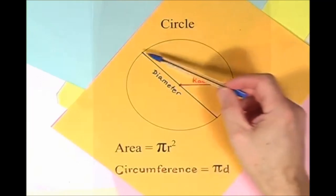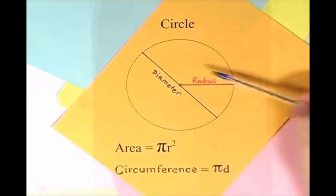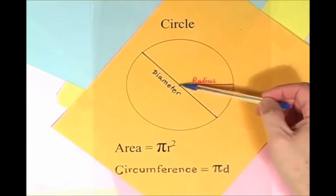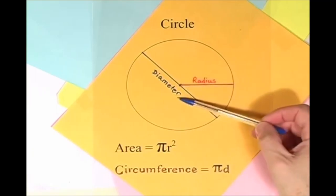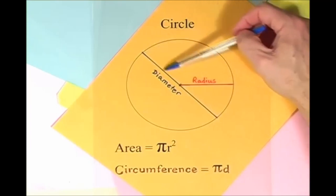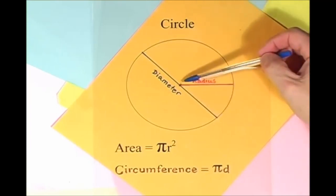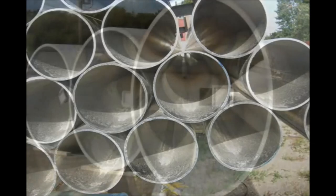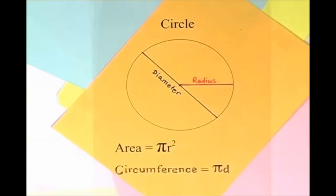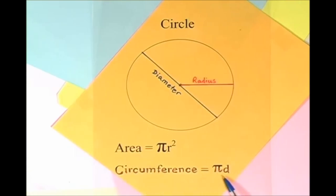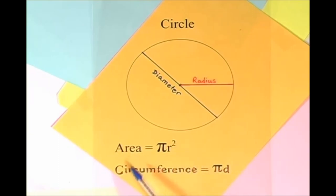Here is a circle, it knows how to get around. It has a radius from center to rim. And its diameter's a line that goes from side to side while passing through the center, now isn't that simple. Pi r squared sounds like area to me, when I need a circumference, I'll just use pi d.